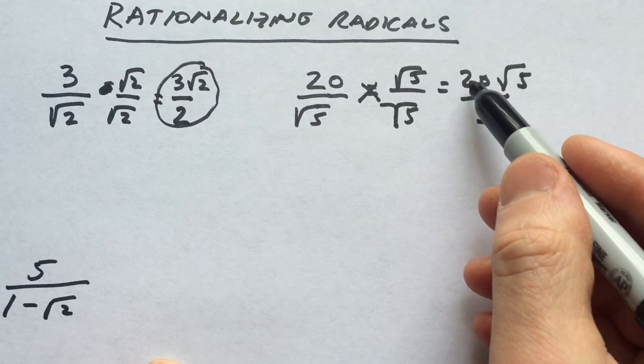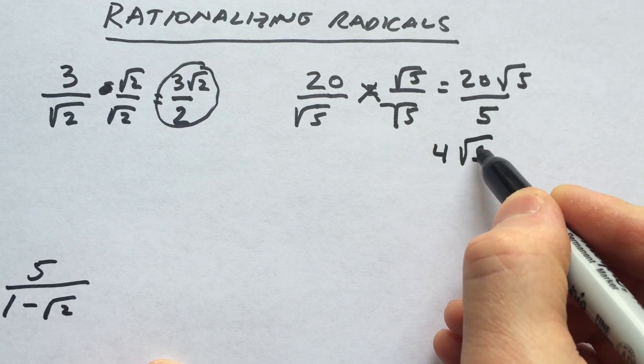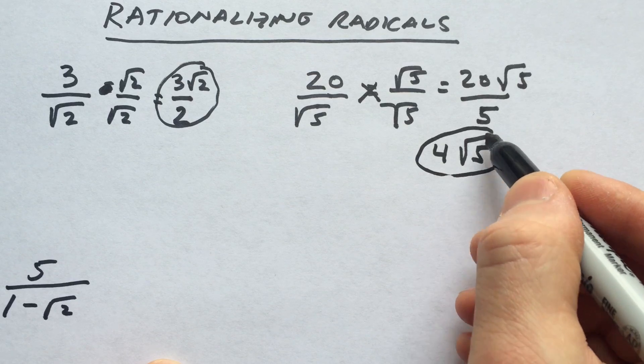which equals 5. But we can reduce the 20 and the 5 a little bit further. This gives us 4√5, and that's it. We've simplified it.